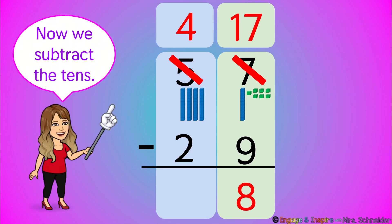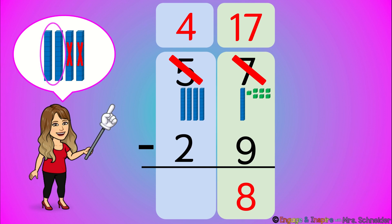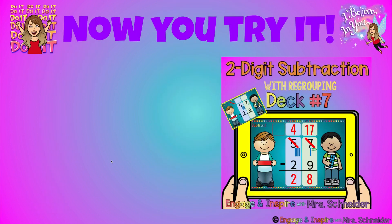Alright, now we subtract the tens. Four minus two. Four minus two equals two. So 57 minus 29 equals 28.